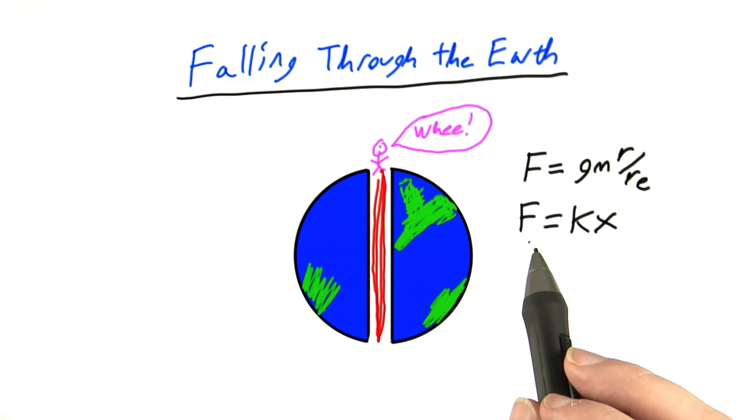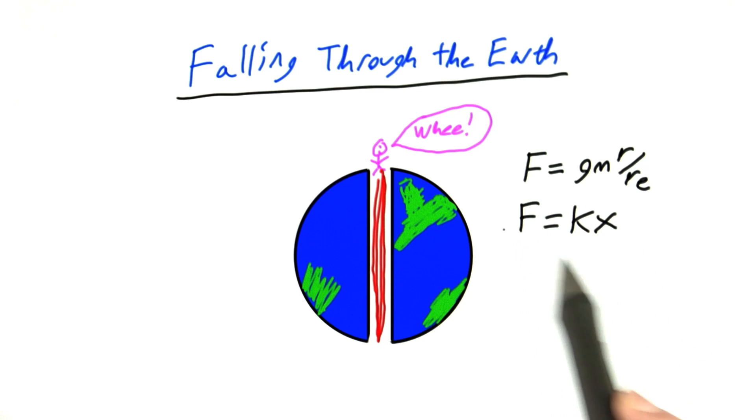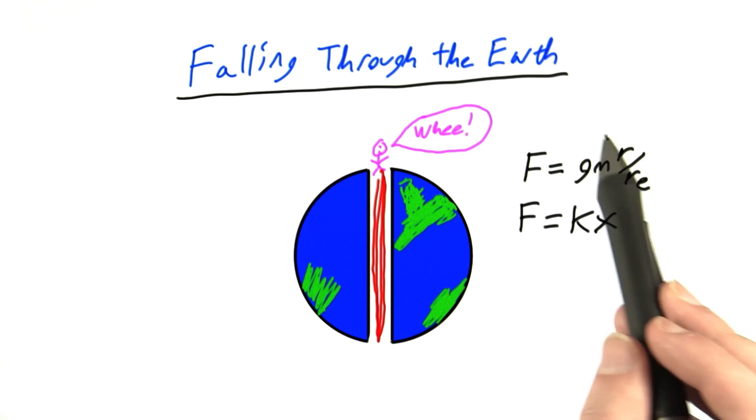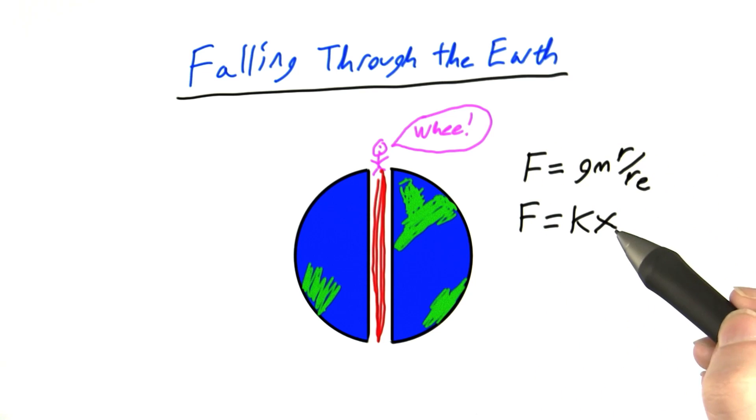Well, it looks exactly like Hooke's Law, which says that the force a spring pulls on an object is equal to the spring constant times its displacement away from the center. So this equation for the force of a spring looks just like this equation for the force of gravity within the Earth's surface, except instead of x we use r, and instead of k we have gm over the radius of the Earth.